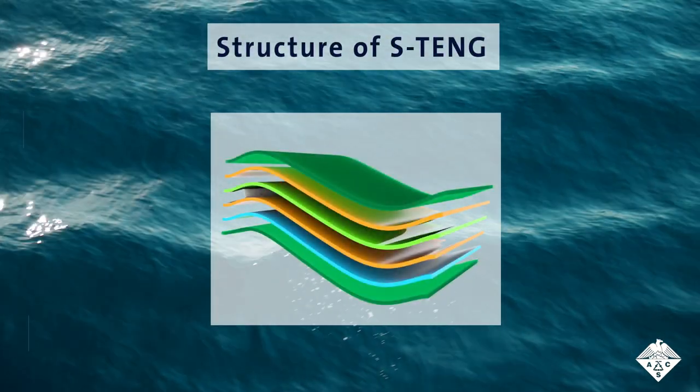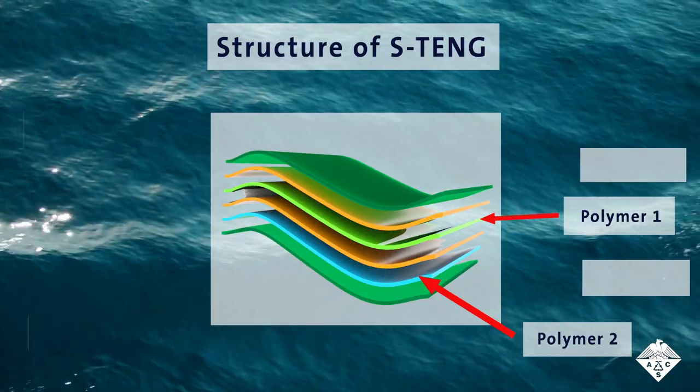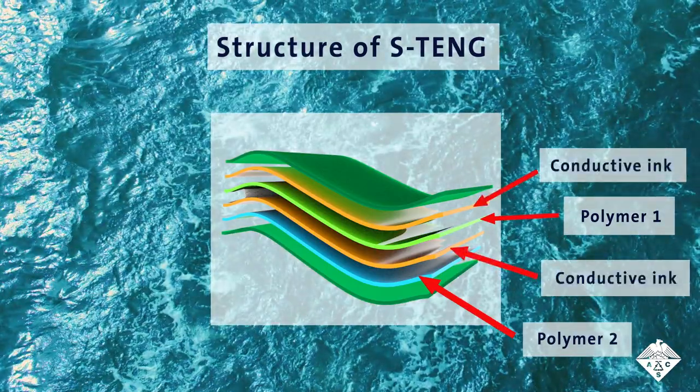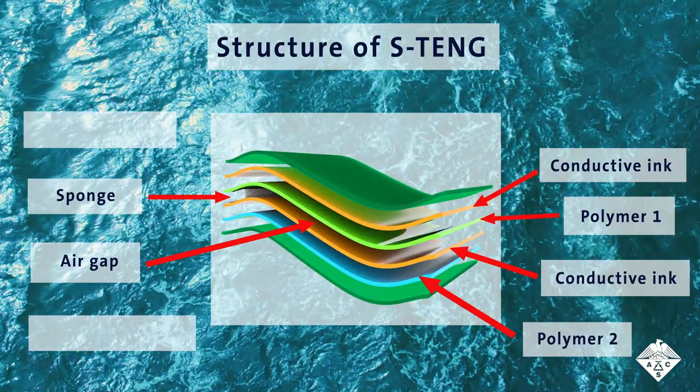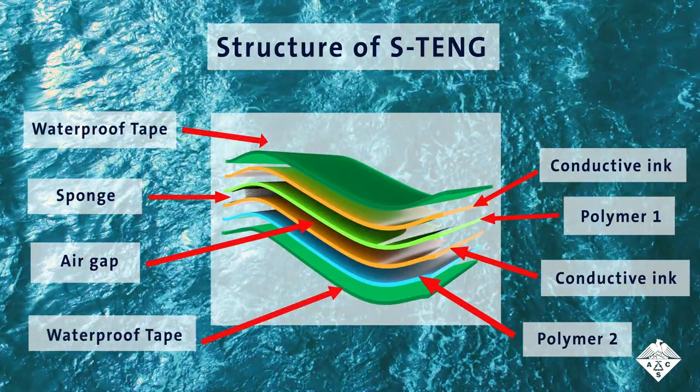To make the flexible devices, the researchers coated strips of two different polymers in a conductive ink. Then, they wedged a small sponge between the strips, creating a thin air gap, and sealed the entire unit with waterproof tape.